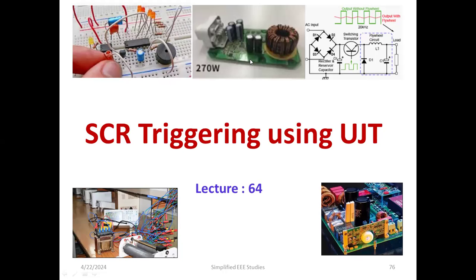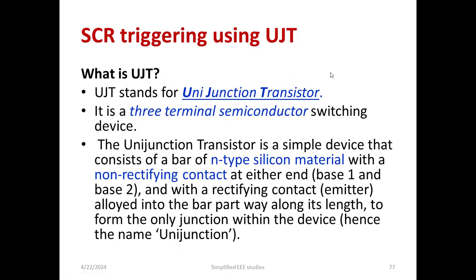Dear all, I would like to welcome you all in the lecture series of power electronics. In this video, I am going to discuss one of the important topics in power electronics, that is SCR triggering using unijunction transistor, that is UJT. We will discuss about how the triggering action on SCR will be taken place by using this special type of transistor called the unijunction transistor. Before explaining, I would like to discuss what do you mean by UJT?